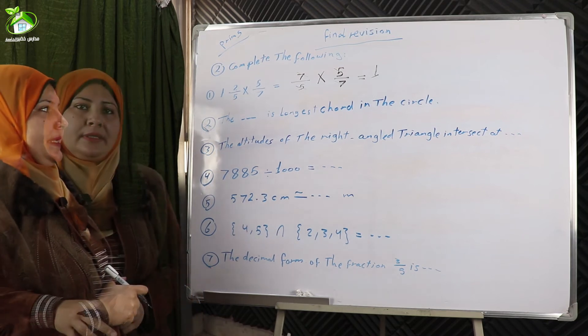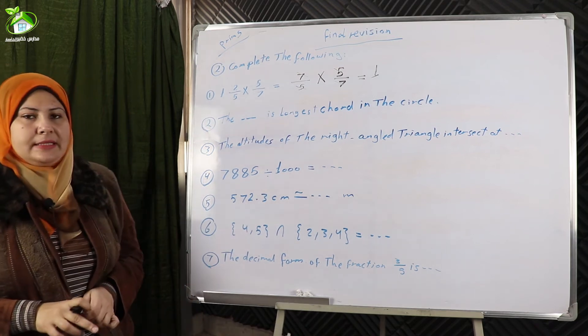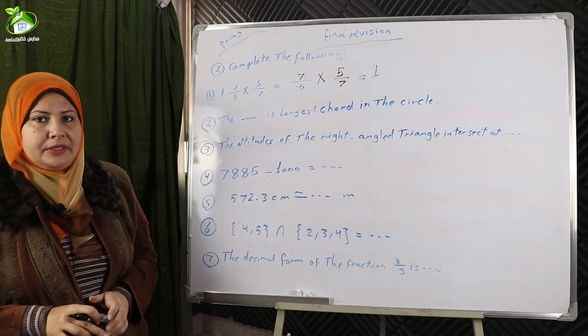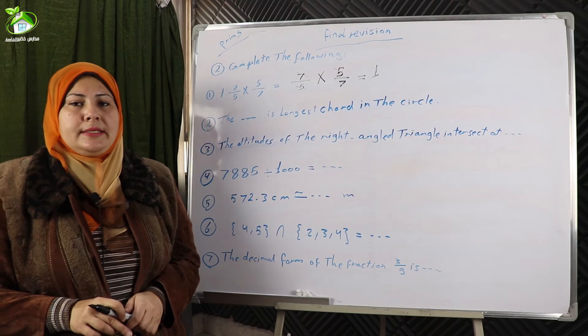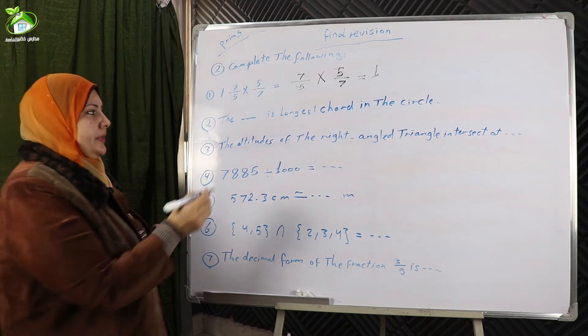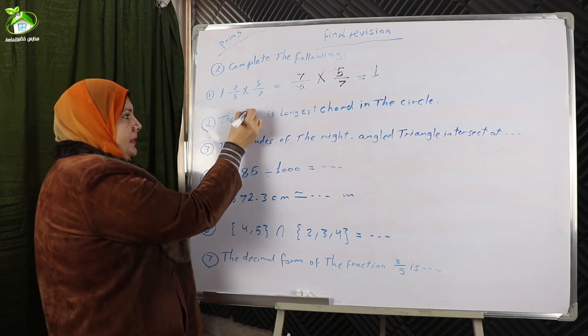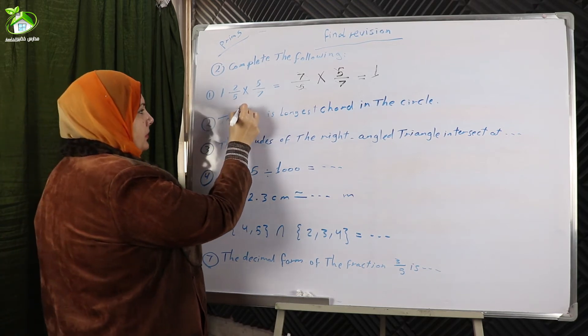Number two: the diameter is the longest chord in the circle.